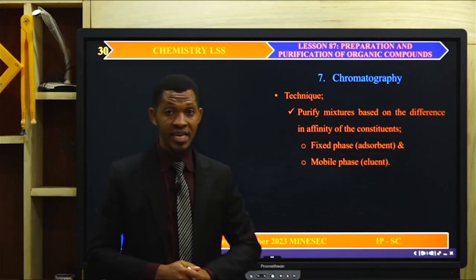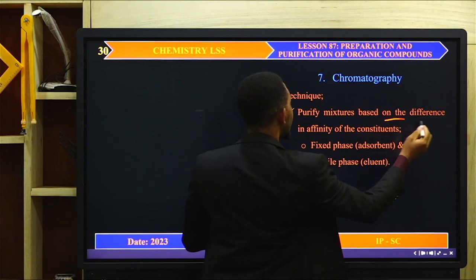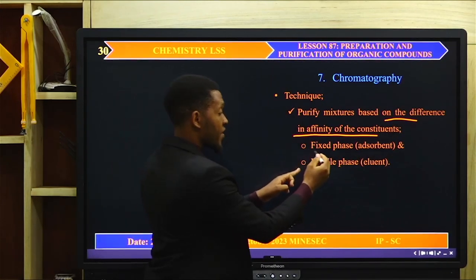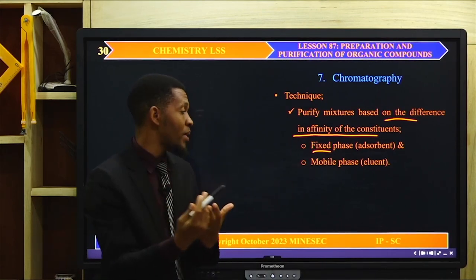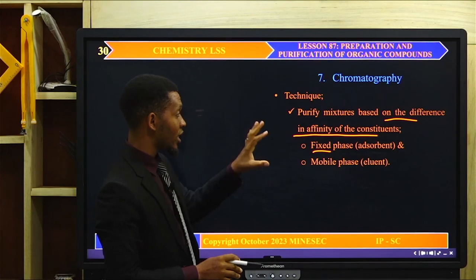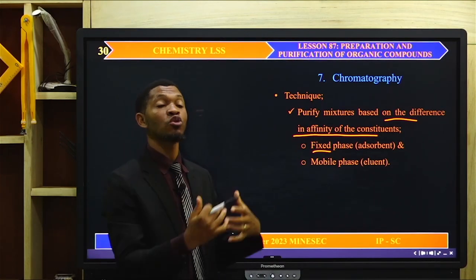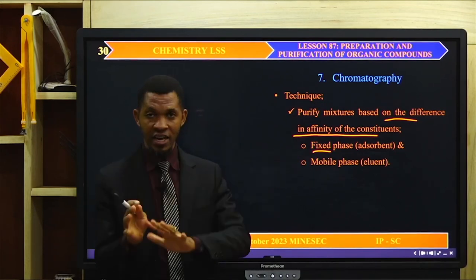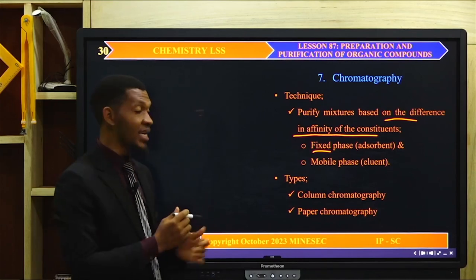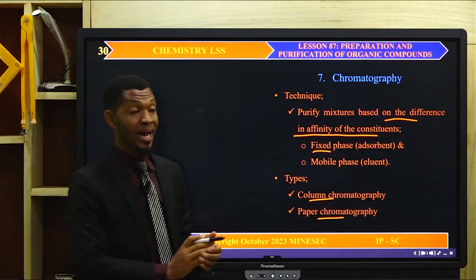Chromatography is the next method. It is a technique used to purify a mixture based on differences in the affinity of their constituents for the stationary phase — also known as the adsorbent — and the mobile phase — known as the eluent. Chromatography separates components in a mixture based on the affinity of those components for the stationary and mobile phases. There are two types of chromatography we will see: column chromatography and paper chromatography.